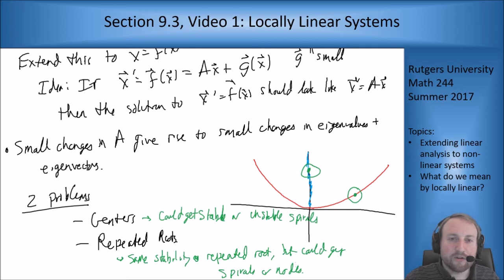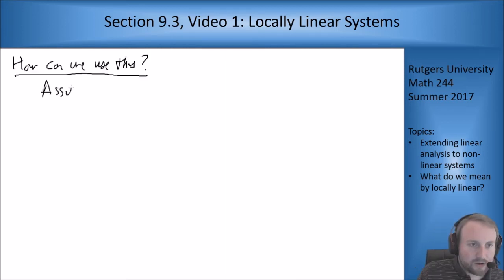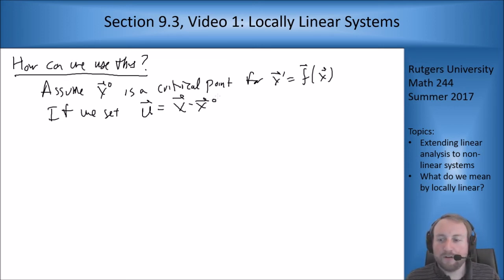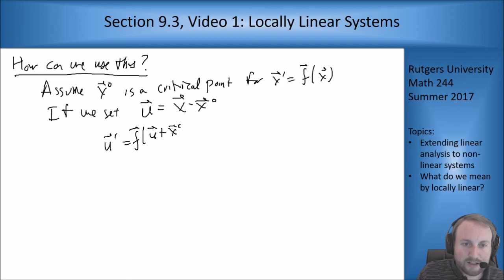We're going to want to start near critical points. So we're going to assume that x0 is a critical point for the system x prime equals f of x. If we set u equals x minus x zero then I can shift this so my critical point for u is at the origin. So if I look at u prime equals f of u plus x zero, then when u is zero I have a critical point.